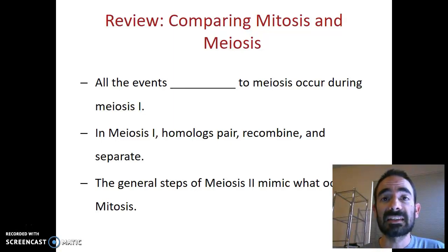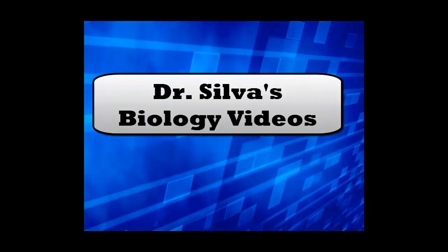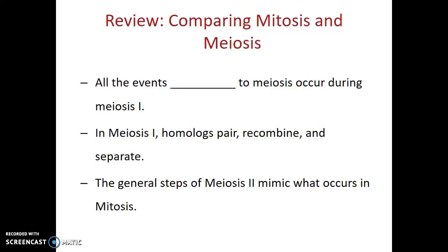In this video, we'll talk about the similarities and differences between the different types of cell division. When talking about the different types of cell divisions, one of the things that's important to realize is that all of the events that are unique to meiosis occur during meiosis I. One of the best ways to summarize meiosis I is through the phrase that homologues, or homologous chromosomes, they pair, recombine, and separate.